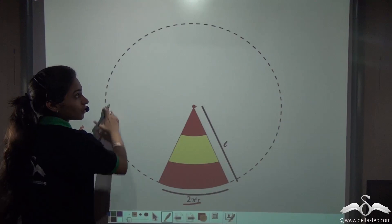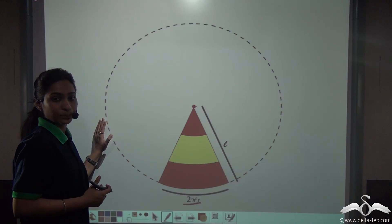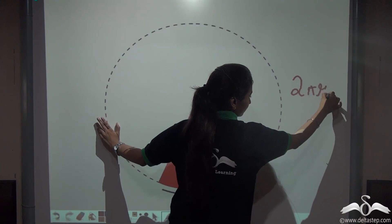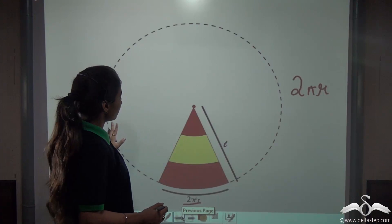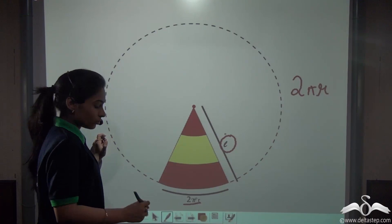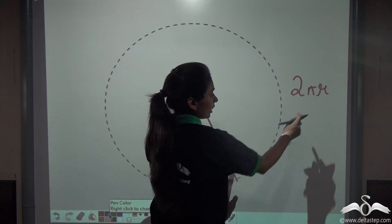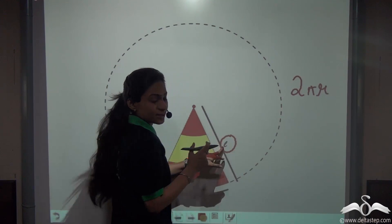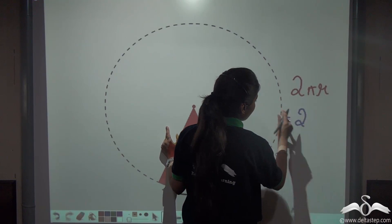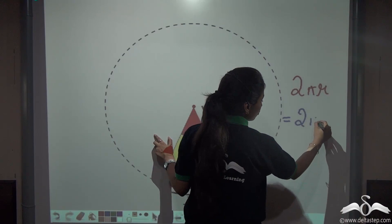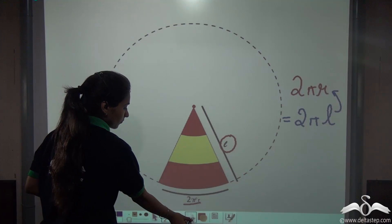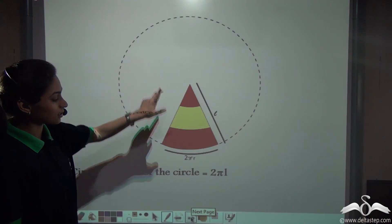So L is acting as the radius of this big circle. What is the circumference of this big circle? The circumference of any circle is 2πr. So what will be the circumference of this big circle if L is acting as the radius? We just substitute L in place of r, because L — the slant height — is acting as the radius of this big circle. So instead of 2πr, the circumference of this big circle is 2πL.